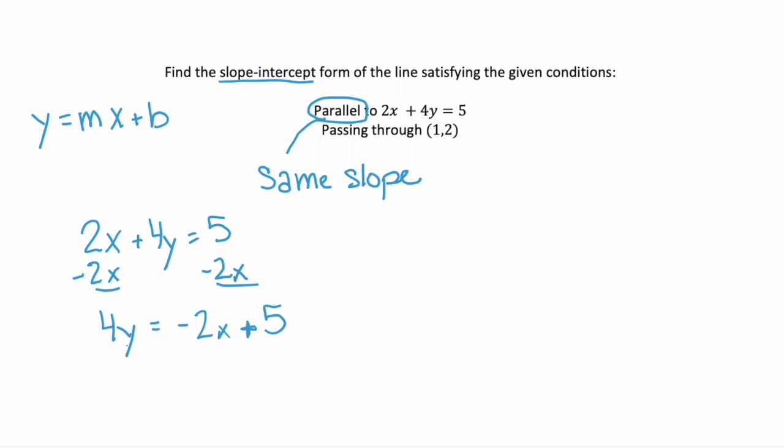Now to isolate y even further, it's multiplied by 4, so let's divide each term by 4. That leaves us with a y on the left hand side, equals negative 2 divided by 4 simplifies to negative 1 half times x plus 5 fourths.